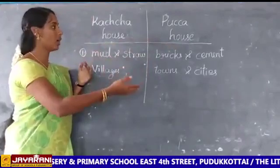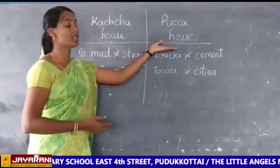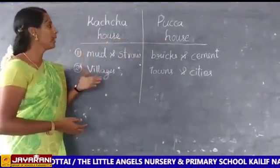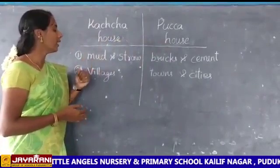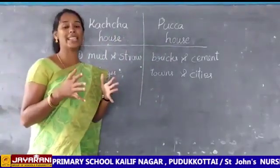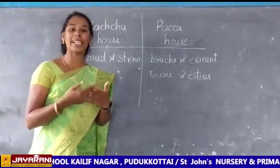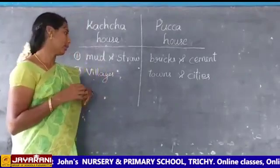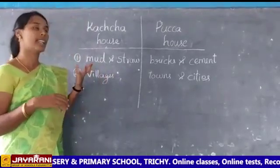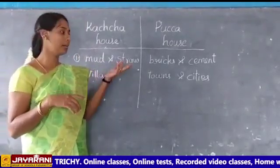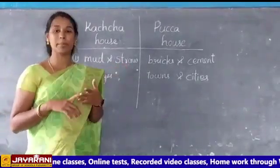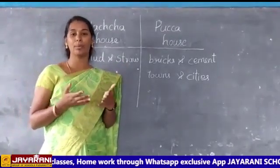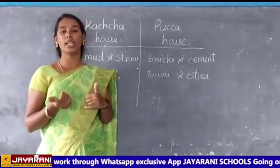Comparing these two houses, pucca houses are stronger than kachha houses. Next, we are going to see what materials are used to build houses. The materials are: mud, straw, brick, cement, stone, dry leaves, bamboo, and wood.